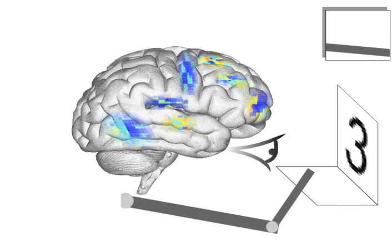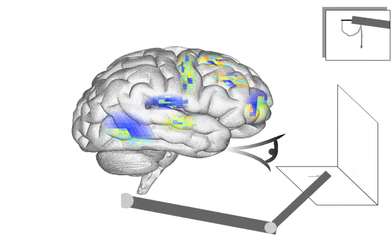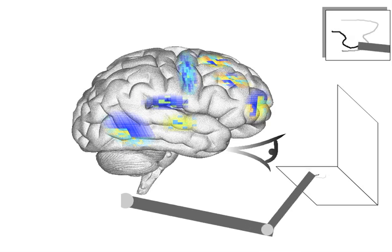For example, inferotemporal cortex, the highest level of the visual hierarchy, is at the back of the brain, while motor areas are in the vertical stripe in the middle. Executive control areas are at the front, with working memory areas just behind them in prefrontal cortex.